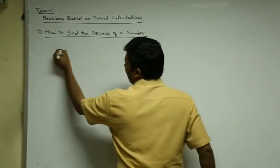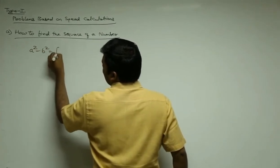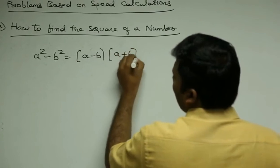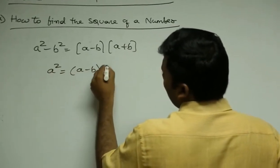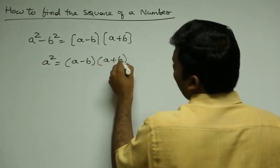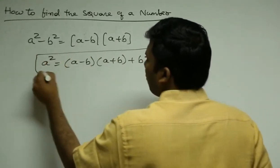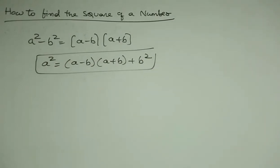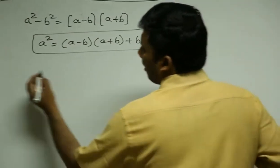To find the square of a number, the logic used is: a² - b² = (a - b)(a + b). Note that if minus b² comes to the right-hand side, it becomes plus b². So another way to write this: a² = (a - b)(a + b) + b². Just listen carefully — hopefully after three to four problems, I will make you answer without using a pen.